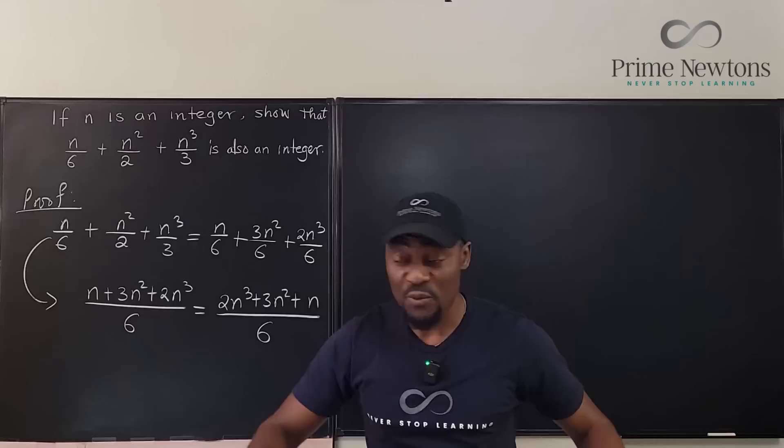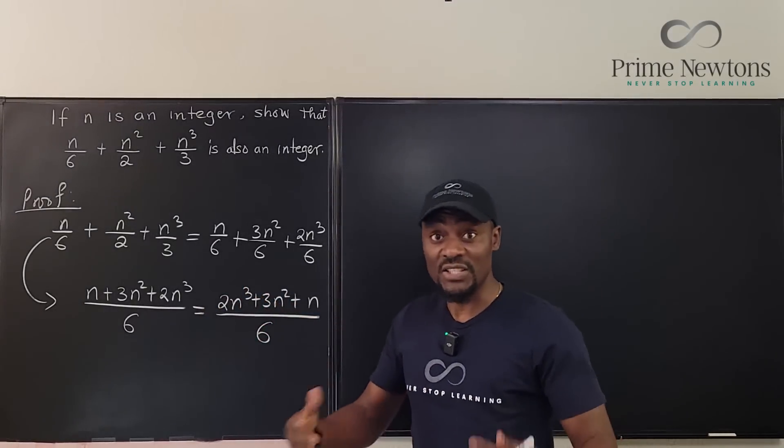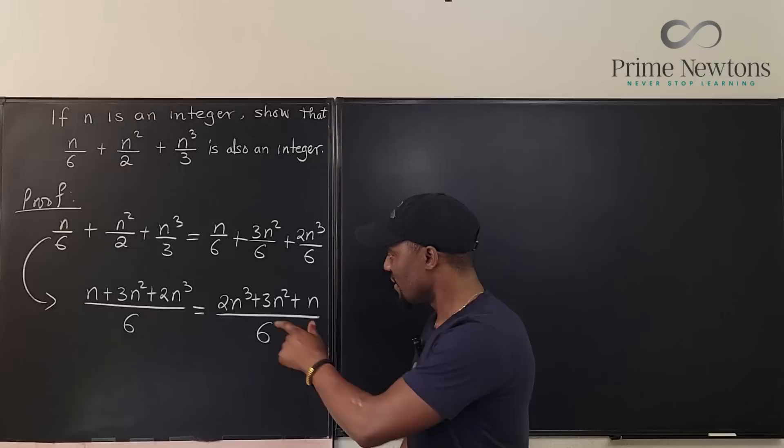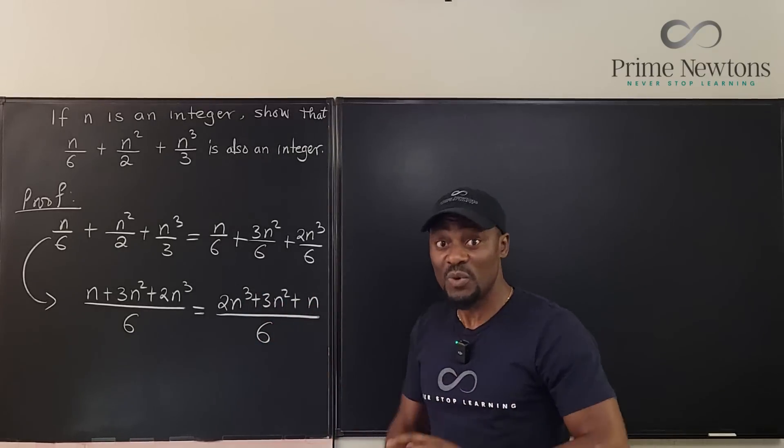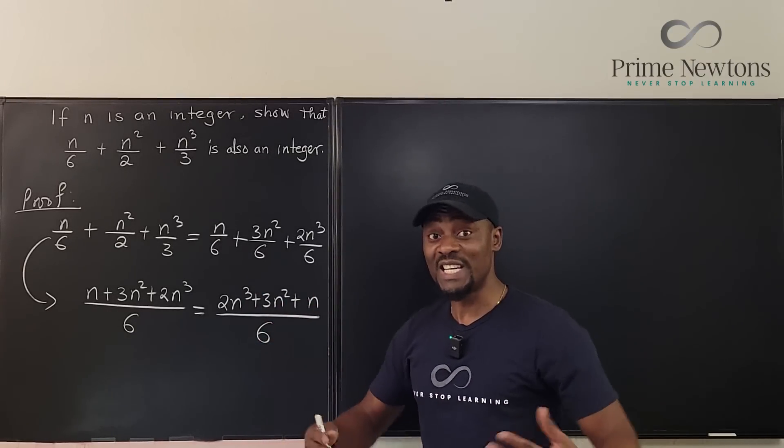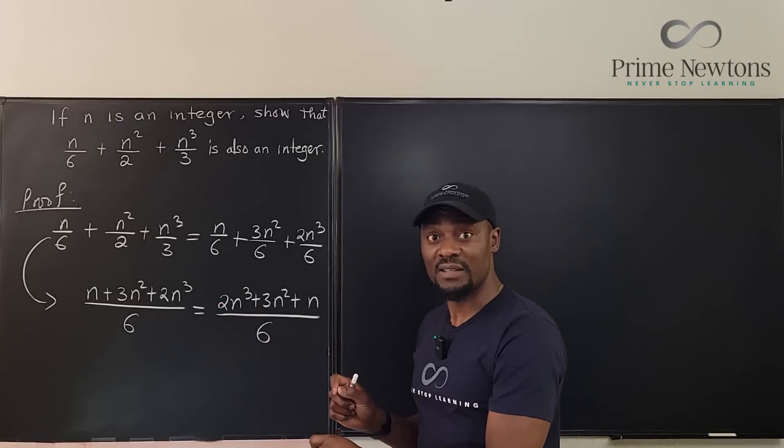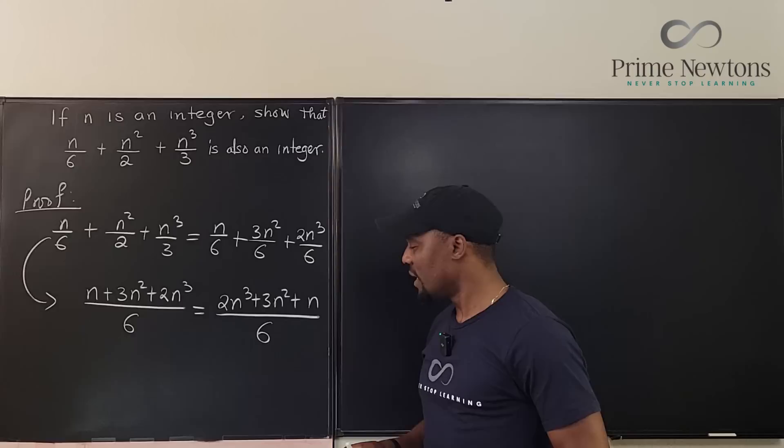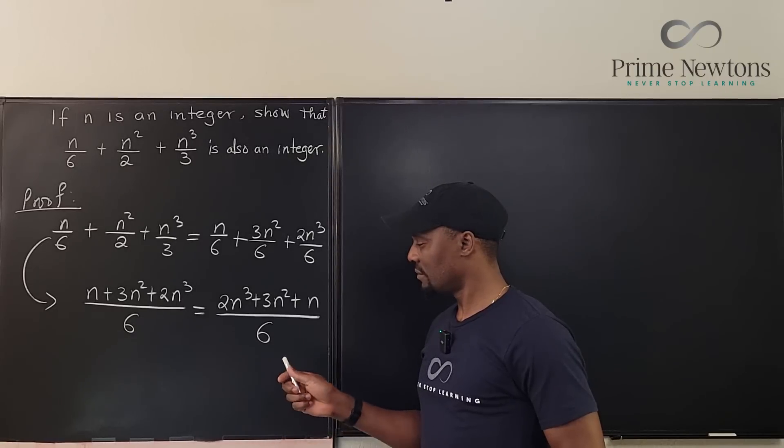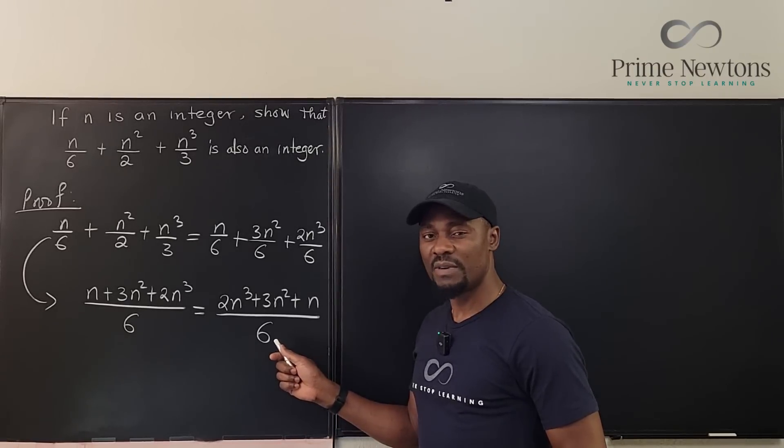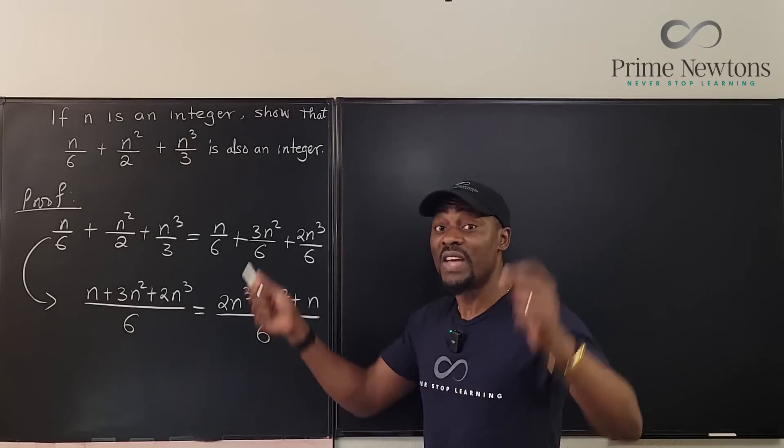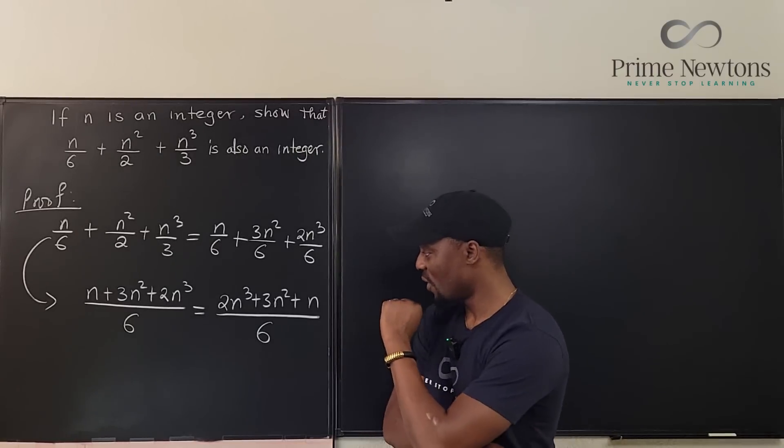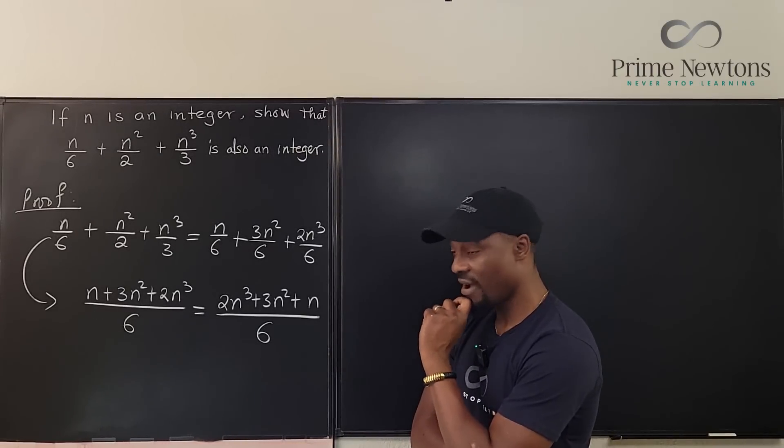The only way that this expression will give you an integer whenever you plug in any value of n is if this is divisible by 6 without a remainder. We just need to show that the top is divisible by 6. The shortcut is that if a number can be divided by 2 and also divided by 3, then the number is divisible by 6.